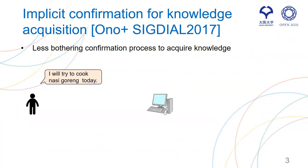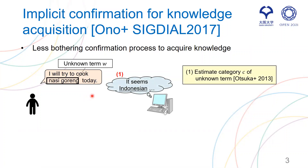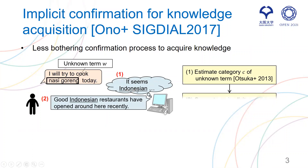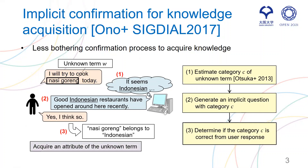For less bothering dialogues, we proposed a process called implicit confirmation for knowledge acquisition, three years ago. Let me show an example. The user says: I will try to cook Nashugoren today. There are unknown terms. For the user utterance, the system estimates the category of the unknown term — here, it is seen as Indonesian. Then the system generates a question: good Indonesian restaurants have opened around here recently. The user replies: yes, I think so. Then the system can determine if the category is correct or not from the user response, and acquire an attribute of the unknown term. We thought this is less bothering than explicit questions, but it has not been empirically verified yet.